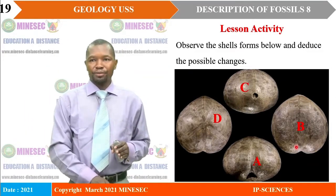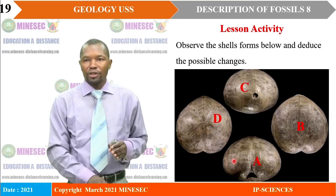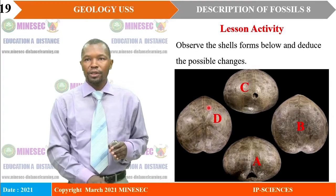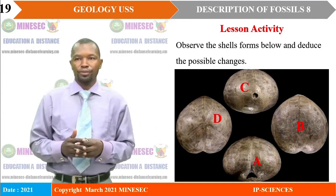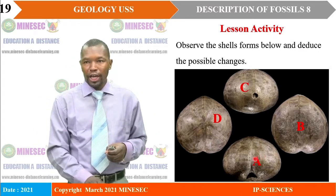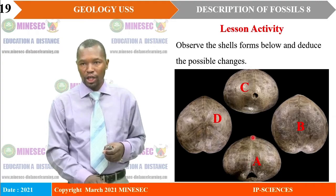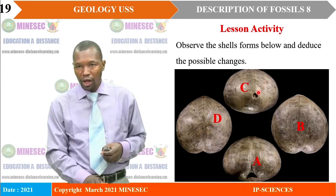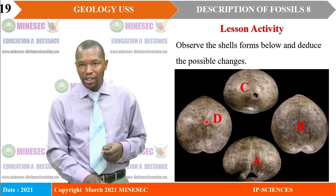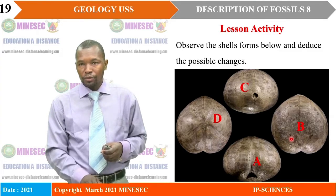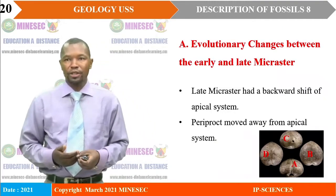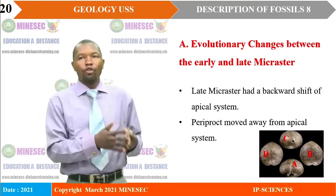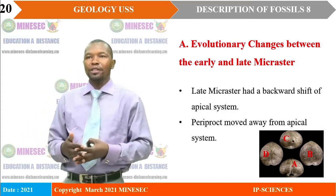Our lesson activity shall observe shells A, B, C, and D, then deduce the possible changes involved. Look at fossil A and fossil C — they have something in common. Look at this portion of the shell and where it is now. Then fossil B and D equally have something in common. Look at the way this surface is arranged and the way it is arranged in D. This guides us to our lesson today, which begins with evolutionary changes between the early and the late Micraster.